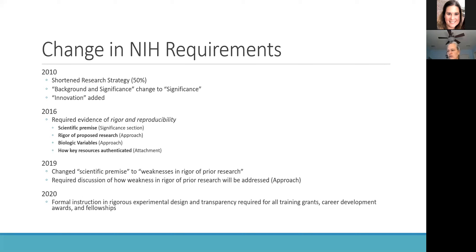In 2020, the most recent change was not so much to research grants but rather to training-type grants and Career Development Award grants. Implemented around May 25th of 2020, all training grants and Career Development Awards moving forward had to include within the training plans evidence of formal instruction in rigorous experimental design and transparency, and a description of what additional skills and training would be gained as part of the training grant in terms of rigorous research.